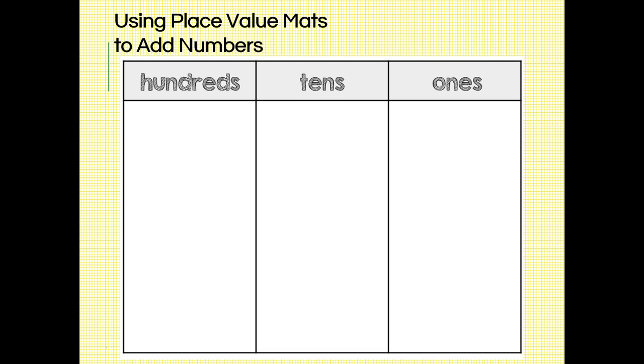Let's look at a similar problem, 76 plus 21. We must first lay down our place value chips to represent each addend.